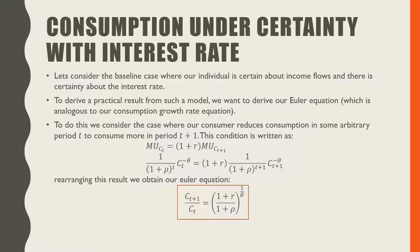Let's consider a baseline case where our individual is certain about his income flows and there is certainty with regards to the rate of return on the market. To derive a practical result, we want to derive our Euler equation, which is analogous to our consumption growth rate equation. To do this, we consider the case where our consumer reduces consumption in some arbitrary period T to consume more in period T plus 1. We're equating marginal utilities across periods, setting the marginal utility from consumption in period T equal to the marginal utility from consumption in period T plus 1 times this rate of return.